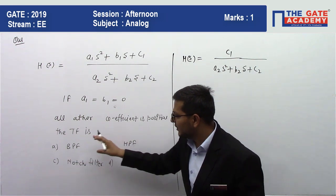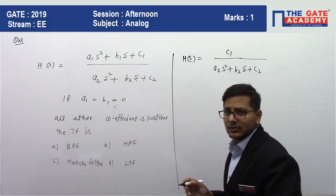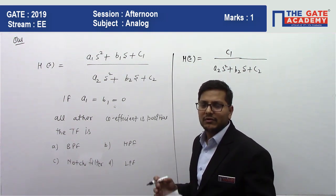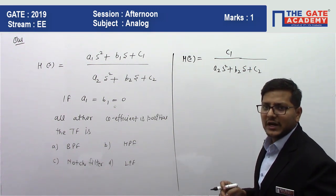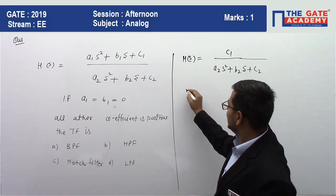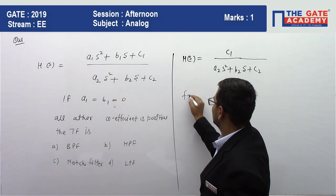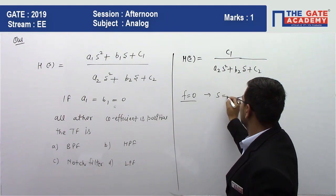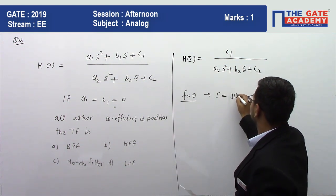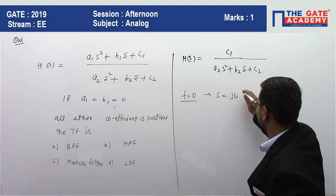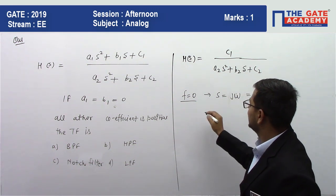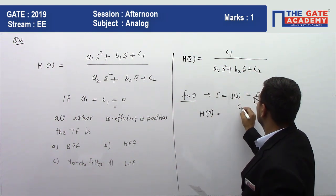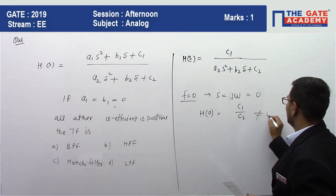Now we have to find which type this filter is. First, we will put the frequency value at f=0, and then we'll put the frequency value at infinity. According to that, we can find out the type of filter. So let us put f=0. In case of f=0, s will be 0 because s equals j omega. Then what will be the transfer function? H(0) will be c1 upon c2, which is not equal to zero.